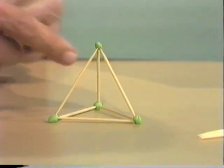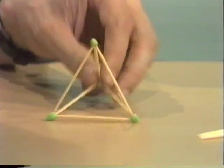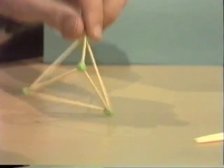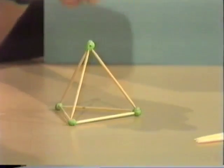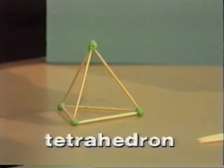There we are, it has a triangle on the bottom and it has one, two, three triangles on the side. And it doesn't matter which way you look at it, it looks almost the same. It's called a tetrahedron and it's one of the most stable three-dimensional structures known.